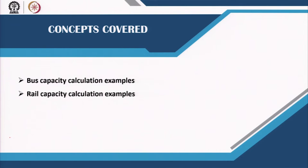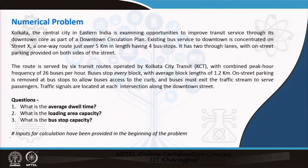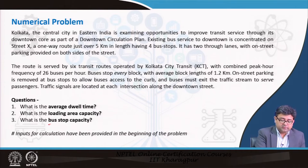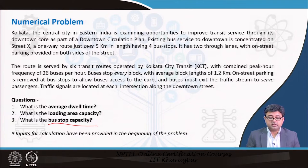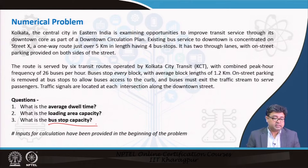You do not have to worry about memorizing these formulas, but understand the concept of what are the different inputs needed in these calculations. If we start with the first problem where we are trying to determine the bus stop capacity — Kolkata, a central city in eastern India, is examining opportunities to improve transit service through its downtown core as part of a downtown circulation plan. Existing bus service to the downtown is concentrated on a street X, which is a one-way route just over about 5 kilometers in length and has 4 bus stops.